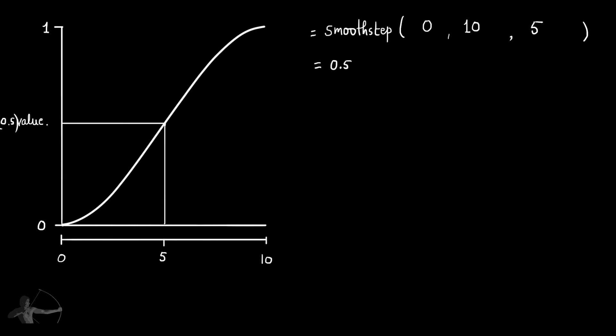This example was straightforward because we provided a value within the range of 0 to 10. What happens if the value is outside this range? If the value is anywhere beyond the higher range value, smoothstep will return 1. And if the value is below the lower range value, smoothstep will return 0.